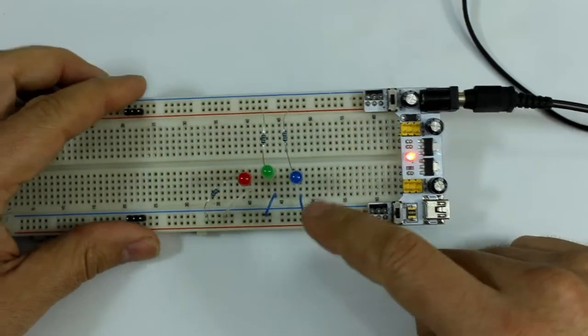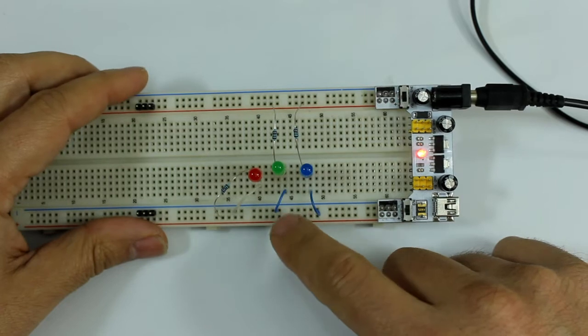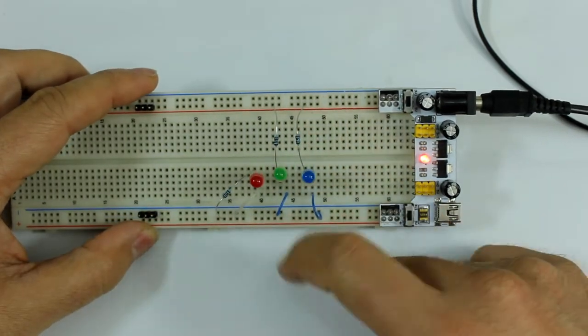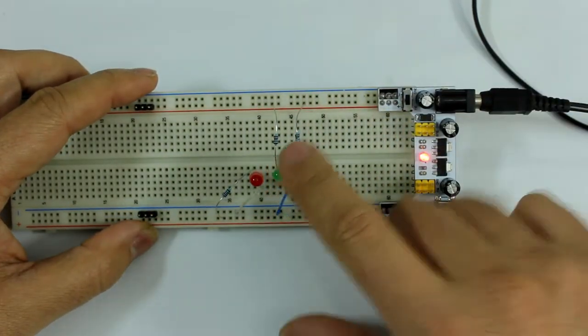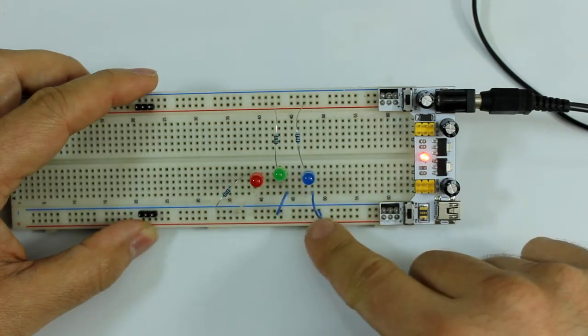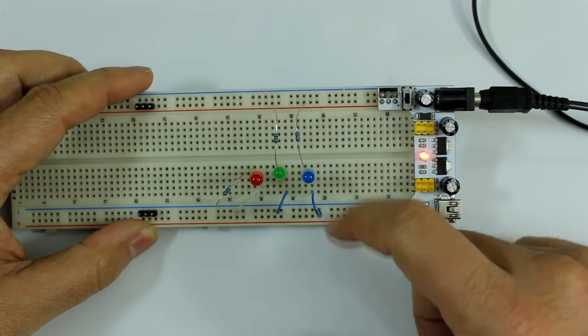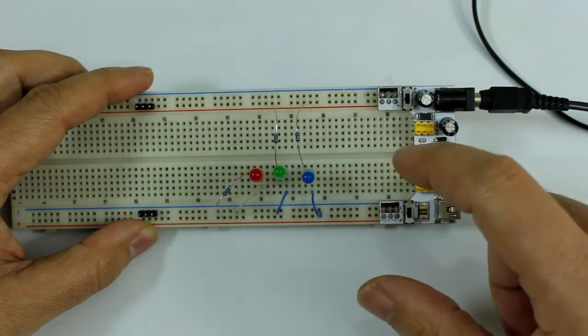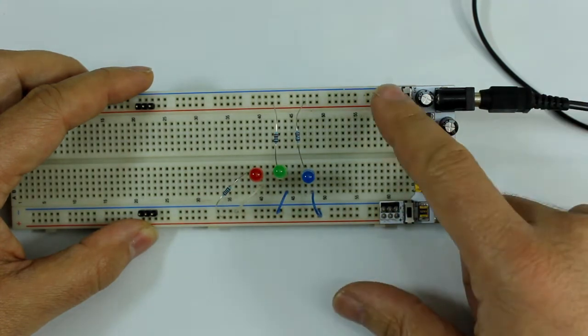And I have here three LEDs connected to these two rails, this one to this rail and this one to this rail. They are off because the switches are off.